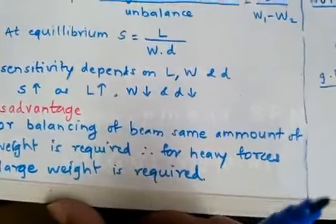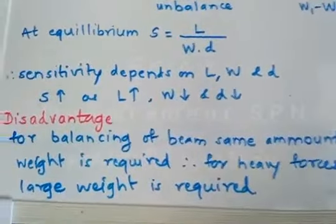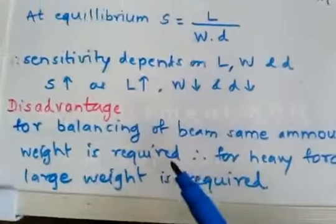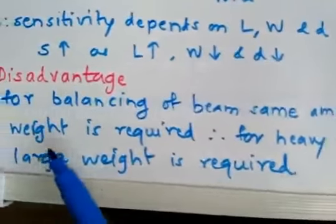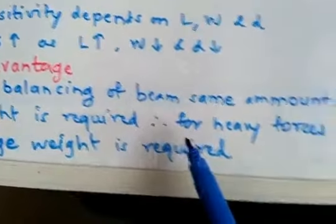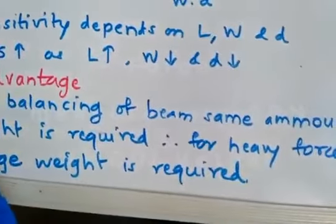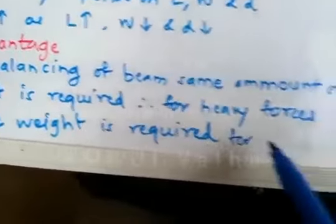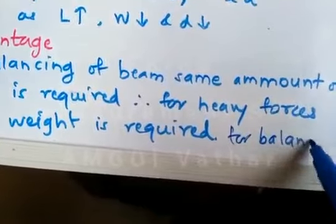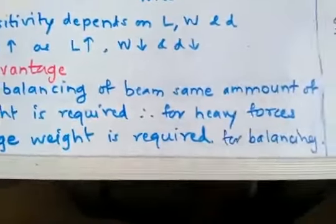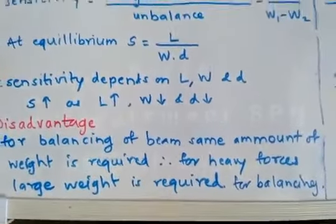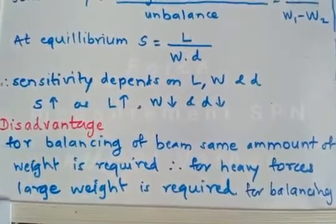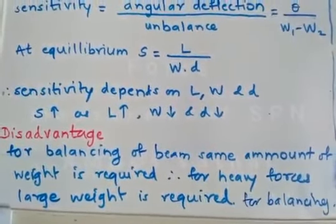Now, this equal arm balance is very simple in construction. It has a major disadvantage that for balancing the beam, the same amount of weight is required. Therefore, for heavy forces or heavy unknown weights, a large amount of weight is required for balancing. Thus, if the unknown force is large, we have to use a large weight to balance, and that is a major disadvantage or limitation of the equal arm balance.